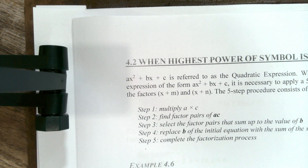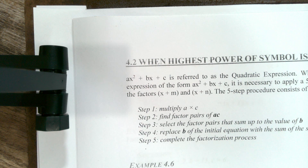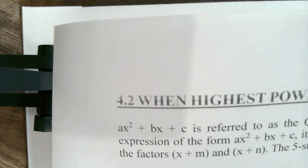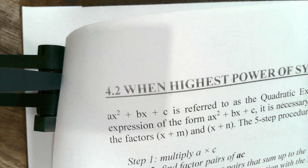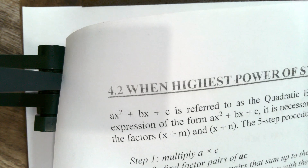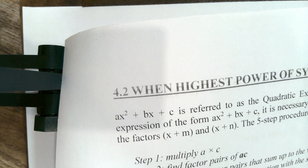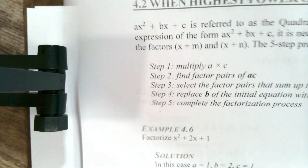Any expression where the maximum power of the variable is 2 is called a quadratic expression. It is always of the form ax² plus bx plus c, where a, b, and c are the coefficients of the quadratic expression. The five-step procedure for factorizing such an expression is as follows.